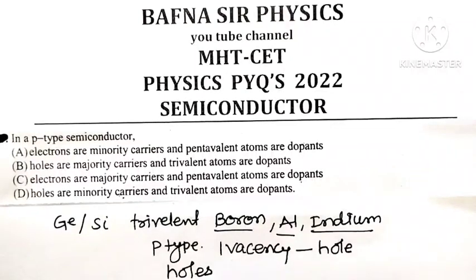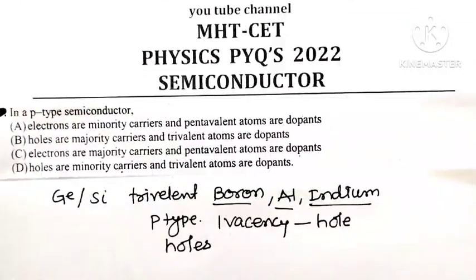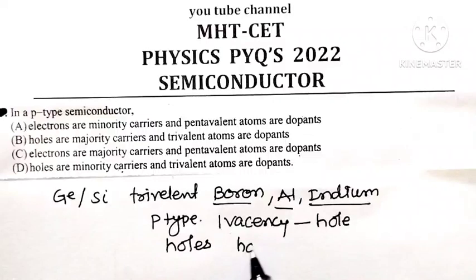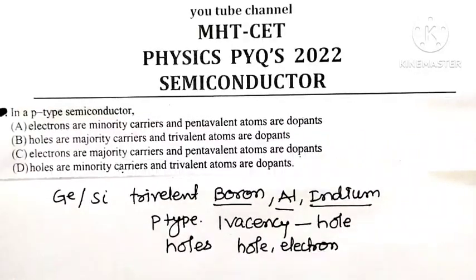But remember, at room temperature, few of the covalent bonds are broken and that's why pairs of holes and free electrons are available. At room temperature in P-type semiconductor, number of holes is large as compared to the number of free electrons, meaning P-type semiconductor has holes as a majority